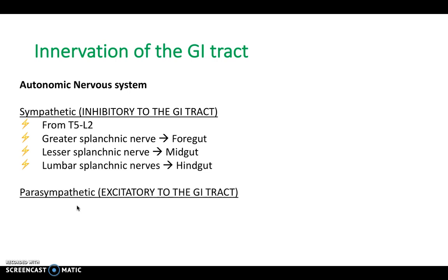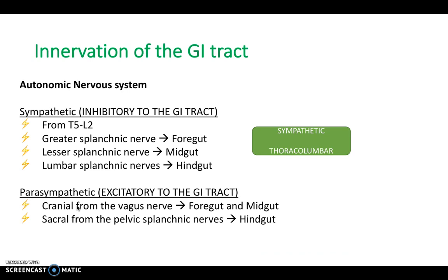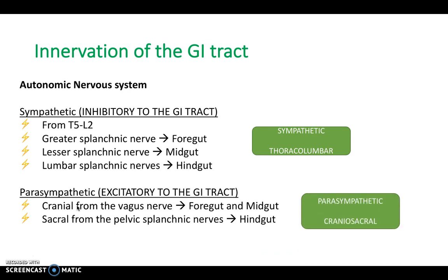The parasympathetic nervous system is excitatory to the GI tract. Cranially it comes from the vagus nerve, supplying the foregut and midgut. The hindgut gets its innervation from the sacral aspect, from the pelvic splanchnic nerves. So the sympathetic can be described as thoracolumbar, and the parasympathetic as craniosacral.